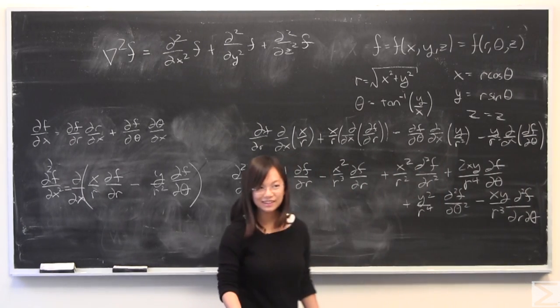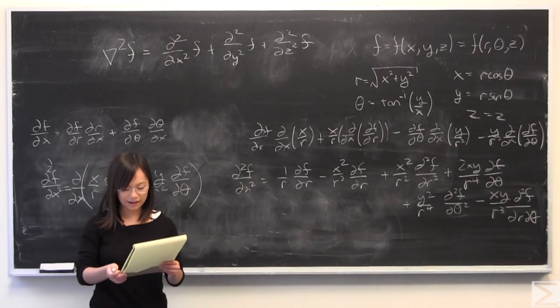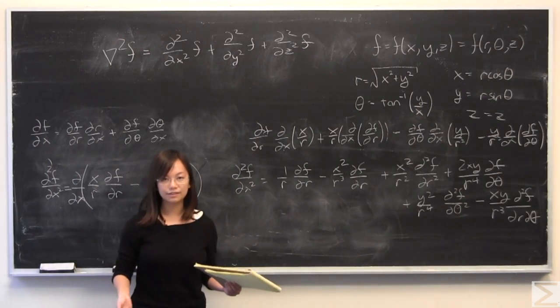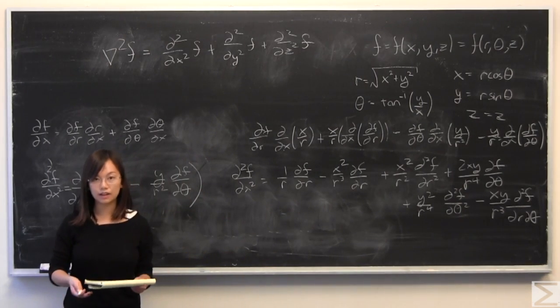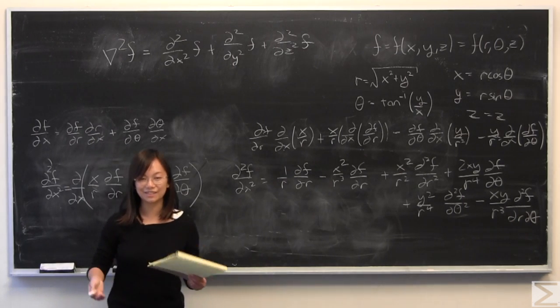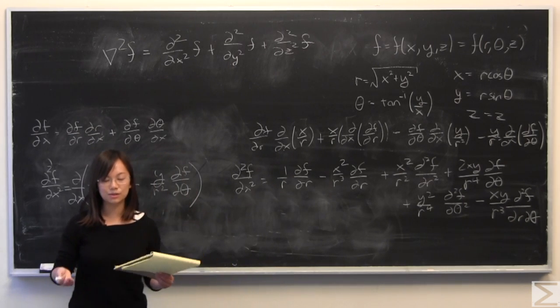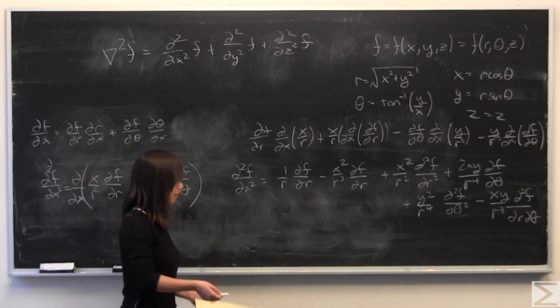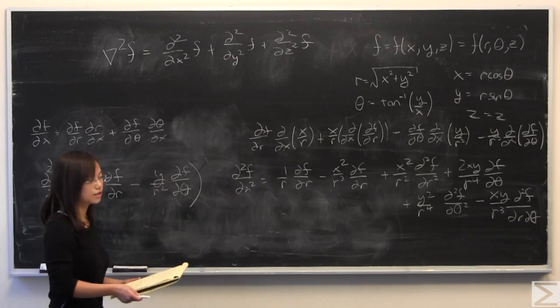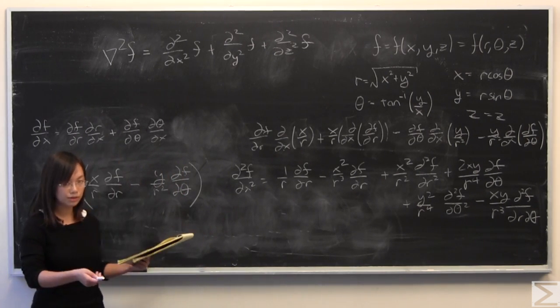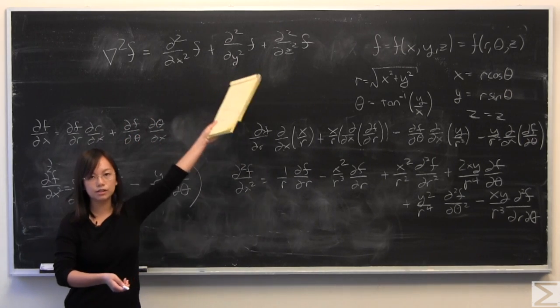I know that looks like a lot, but if you take a look at the second partial derivative of f with respect to y, you'll see that there's a lot of cancellation between when you add those terms. And you will have to add those terms because the Laplacian requires it.